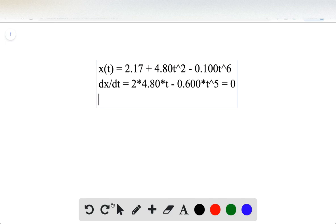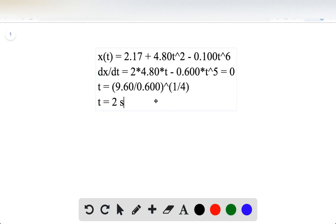To find t, we find that t is equal to 9.60 divided by 0.600 raised to the 1/4 power. Thus t is equal to 2 seconds. The velocity is zero at a time of t equals 2.